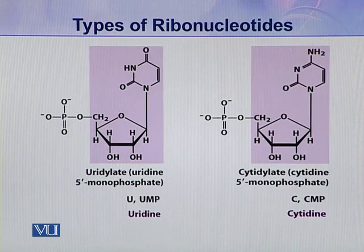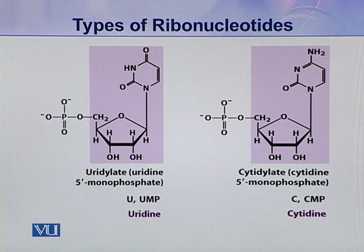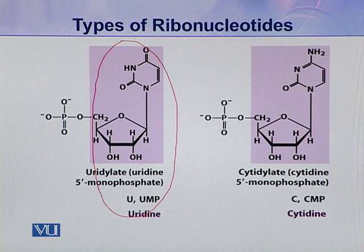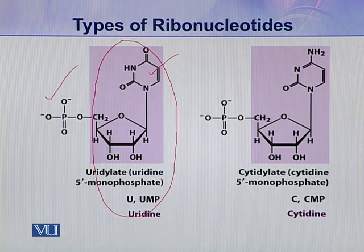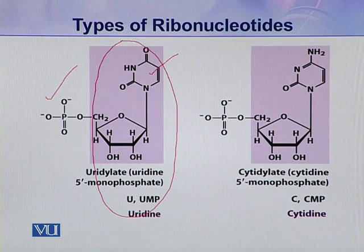Here are two other types of ribonucleotides. This coloured portion is uridine because the nitrogenous base present here is uracil. When one phosphoric acid group is attached to this uridine, it becomes uridylate — this is the third type of ribonucleotide present in nucleic acids.